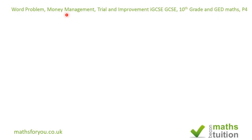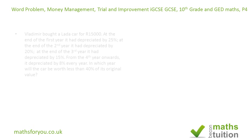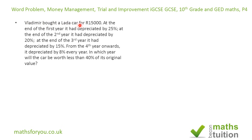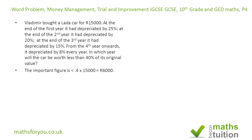Here's the question. Vladimir bought a car for 15,000 rubles. At the end of the first year it had depreciated by 25%, so it's worth 75% at the end of year one. At the end of the second year it had depreciated by 20%. At the end of the third year it had depreciated by 15%. From the fourth year onwards, each year it depreciates by 8%. In which year will the car be worth less than 40% of its original value?